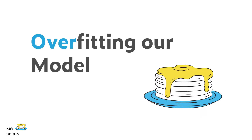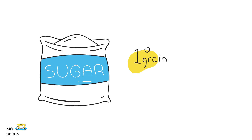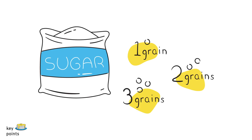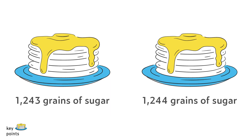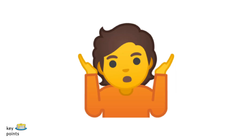Likewise, if we overfit our model, we might have splits like one grain of sugar, two grains of sugar, three grains of sugar, and so on and so forth. Counting out grains of sugar is going to take far too much time. And will we even be able to perceive the difference between a recipe made with 1,243 grains of sugar and one made with 1,244 grains? Probably not.